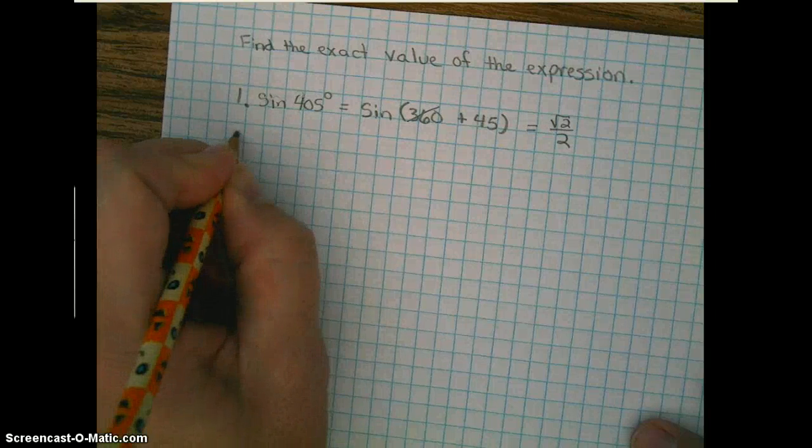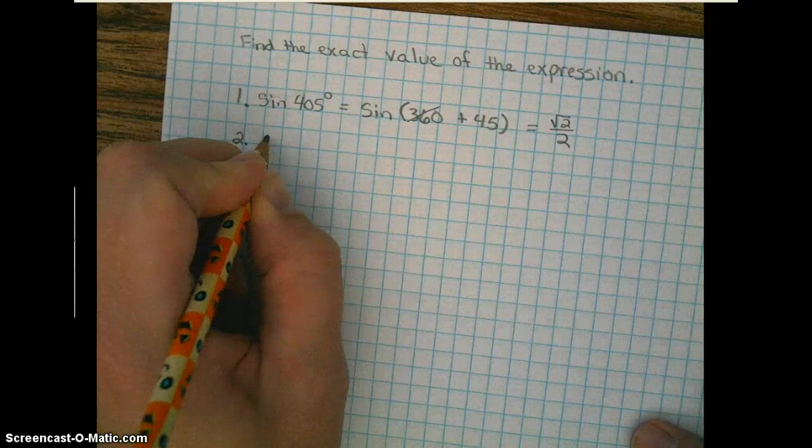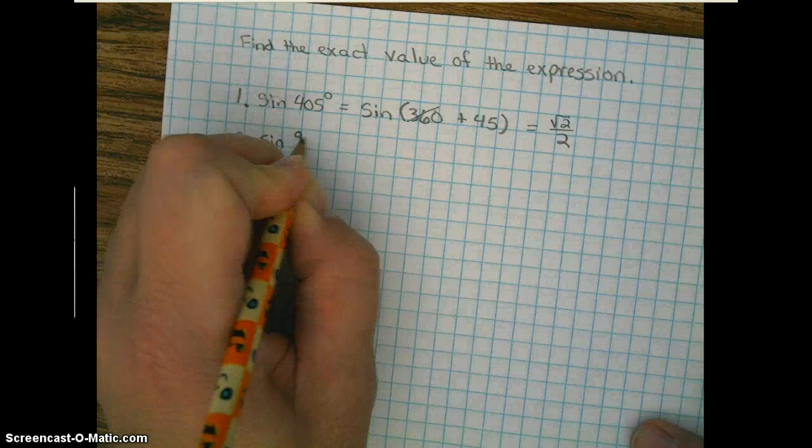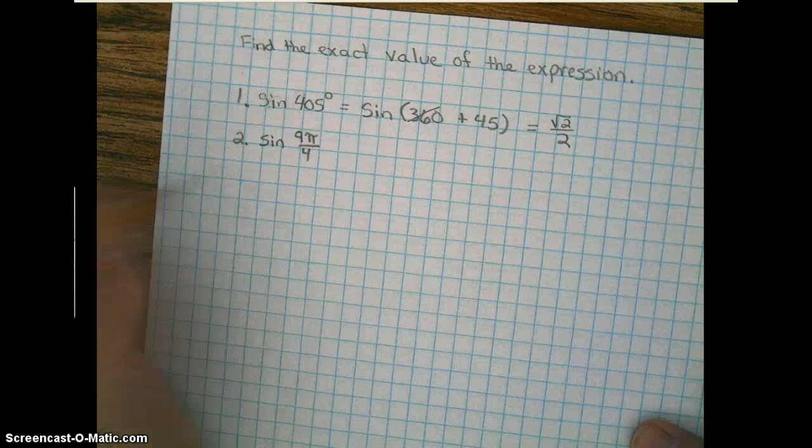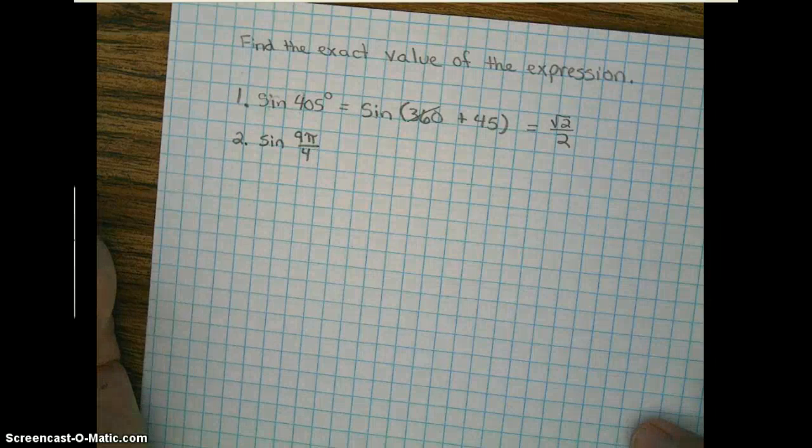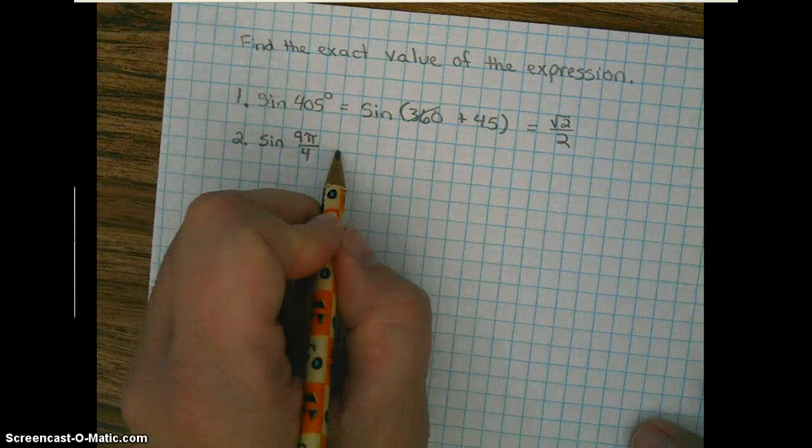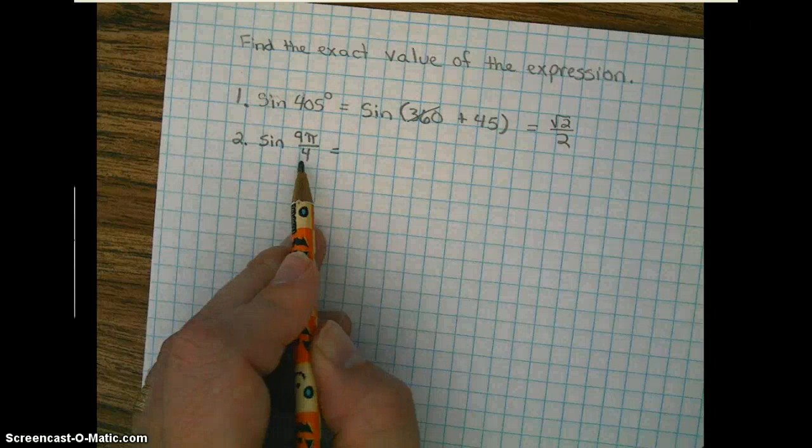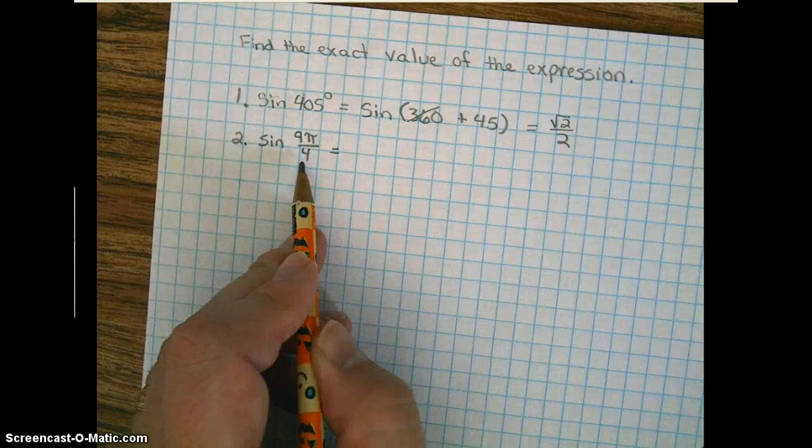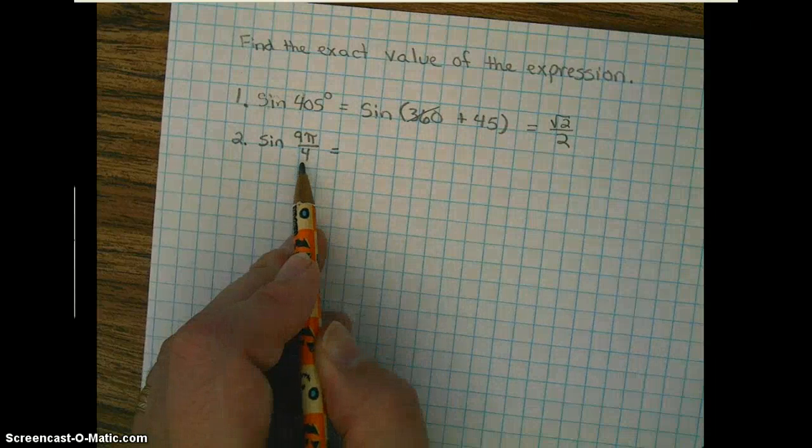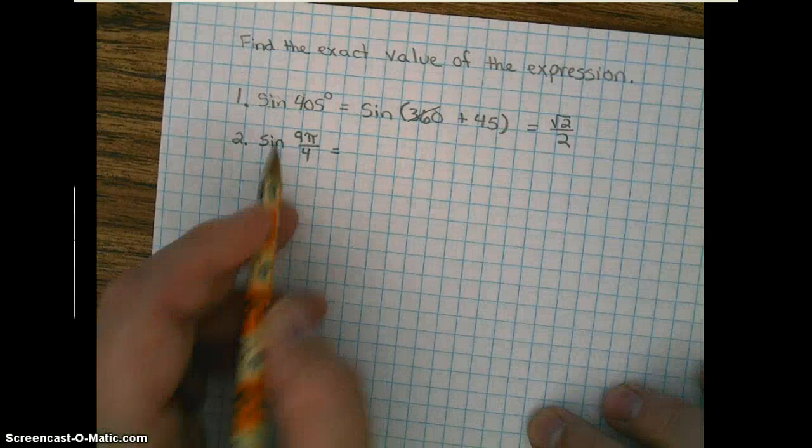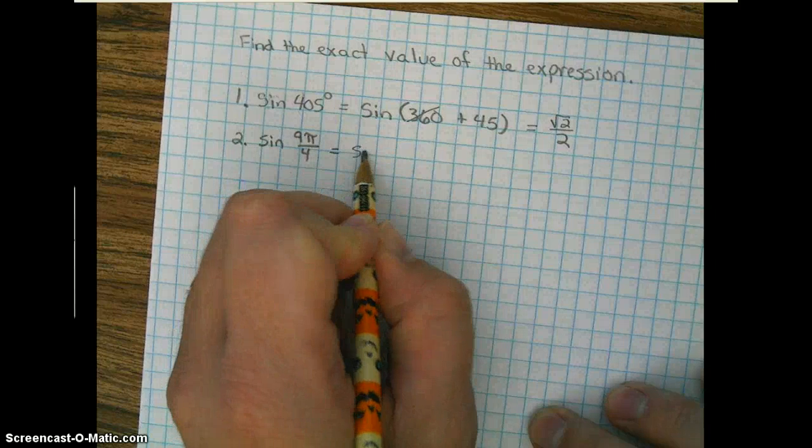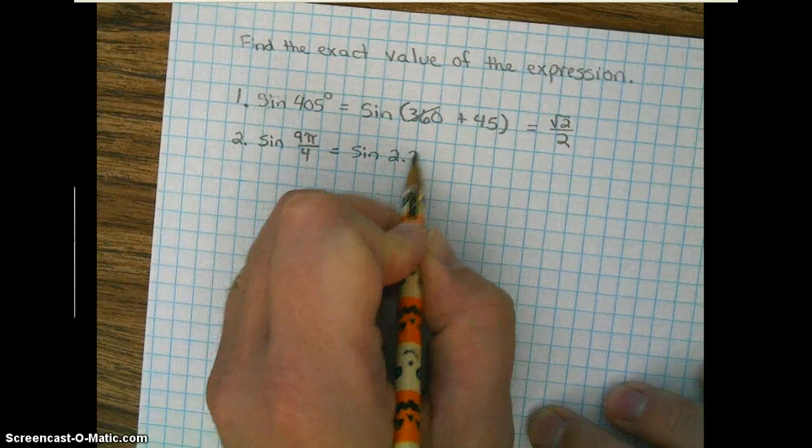Let's do another example. Let's do the sine of 9π over 4. This time, we can see that 9 divided by 4, if you divide those two numbers, you're going to get 2.25. So what we have here is the sine of 2.25π.